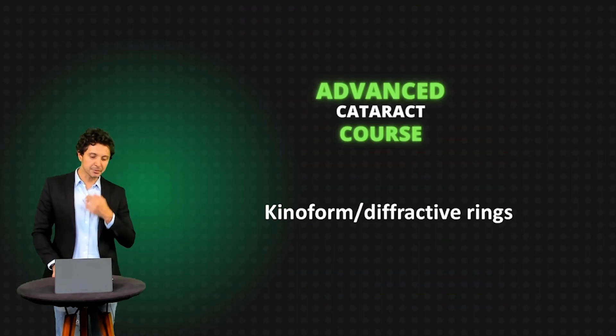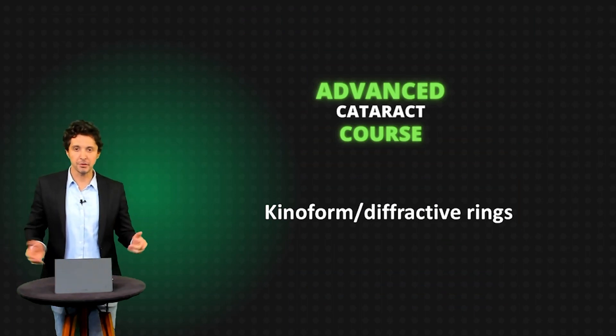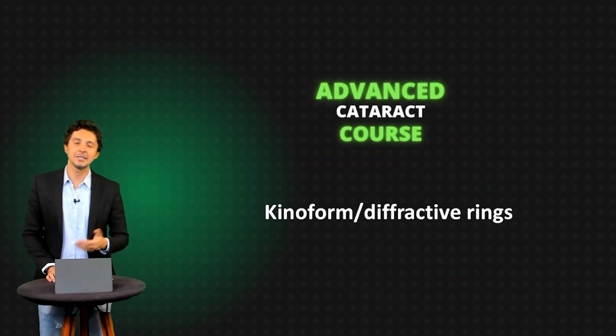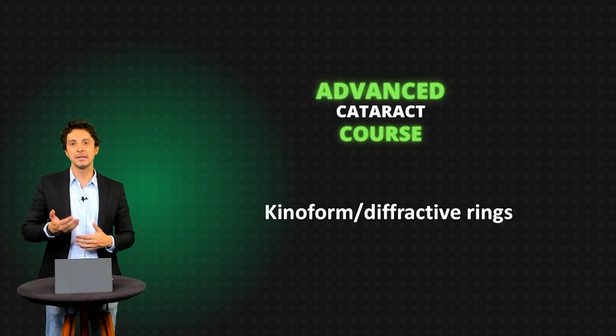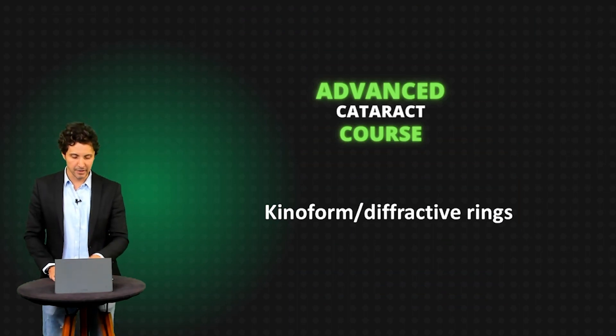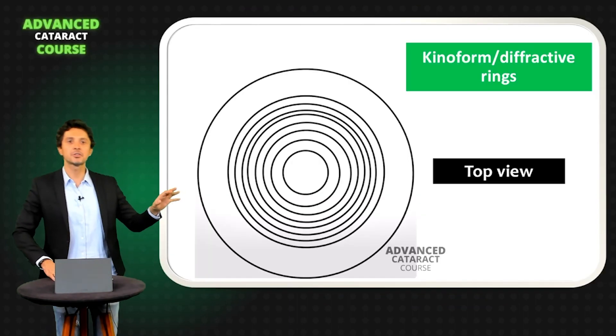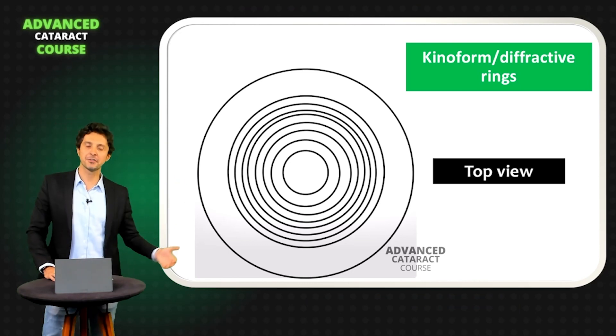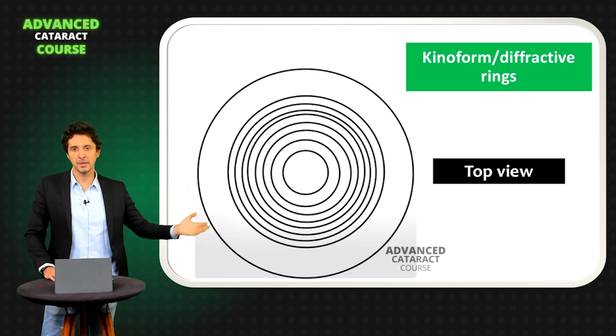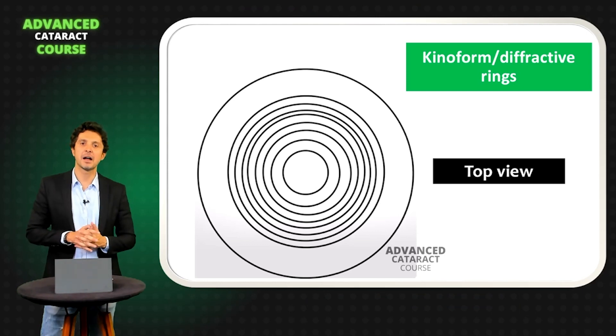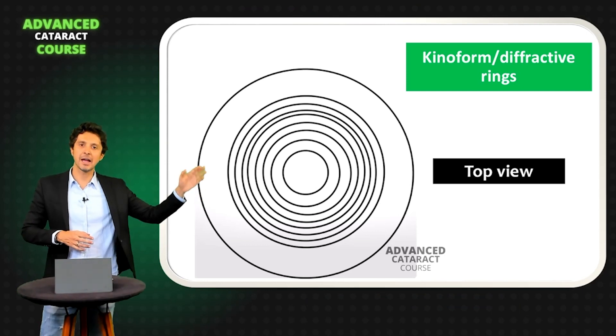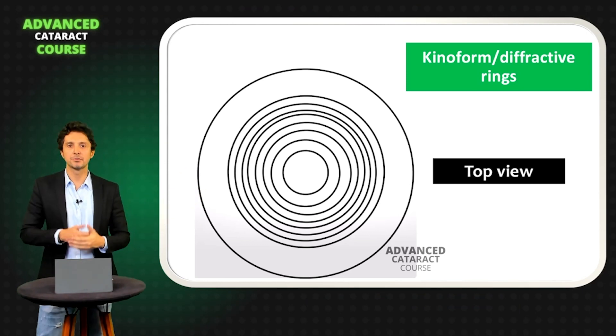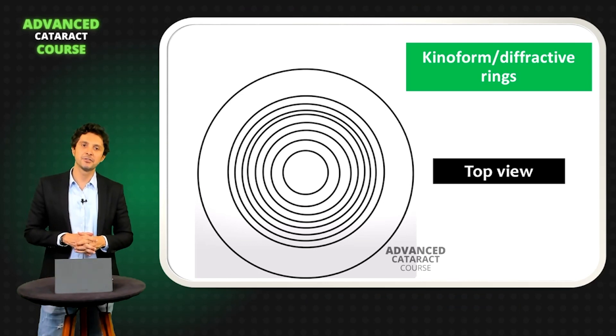So let's start with kinoform diffractive ring. It is the secret, the key for the multifocality in this kind of IOL. And here is a top view of diffractive rings. As you can observe, it's so easy. I believe everybody knows about this kind of bifocal or trifocal diffractive IOLs.